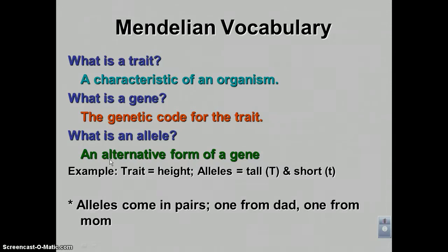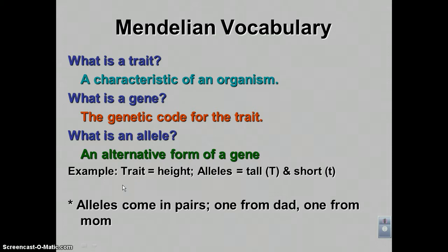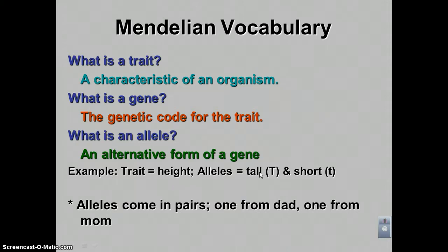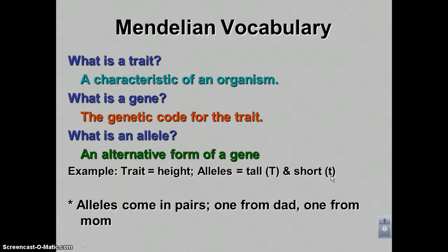A great way to remember this: you see 'AL' in allele and 'AL' in alternative — allele, alternative. In plain English, consider the trait of pea plant height. The gene for height comes in two forms: a tall form and a short form. The capital letter T means tall is the dominant allele, and the lowercase t means short is the recessive allele.